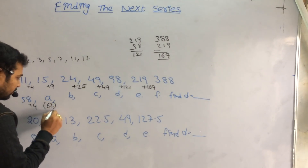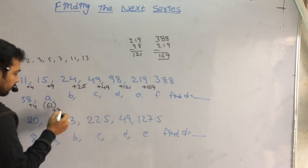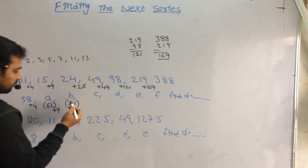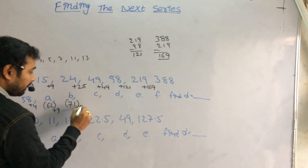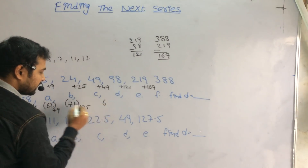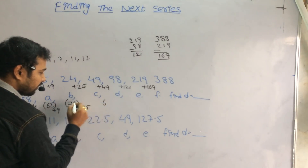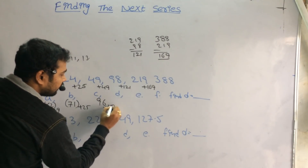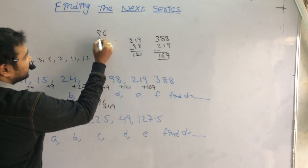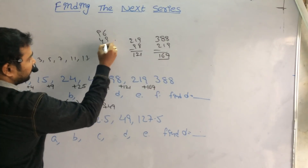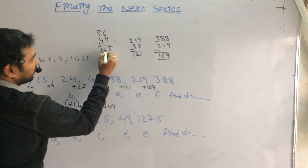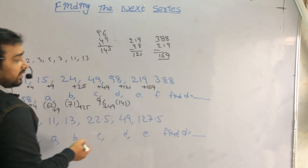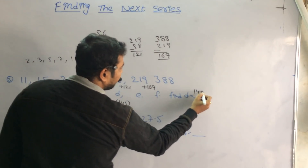We add 9 to 62: 62 plus 9 is 71. Then 71 plus 25 is 96. Then add 49 to 96: 96 plus 49 is 145. So the value of D is 145.